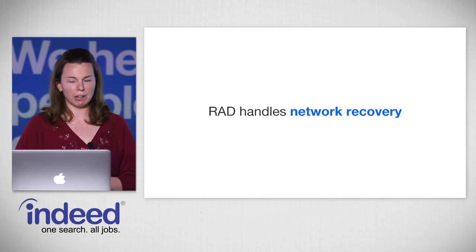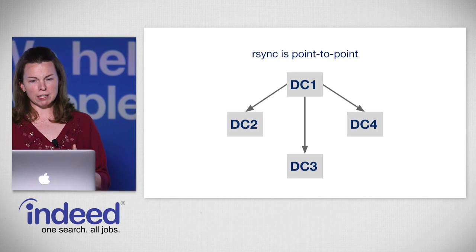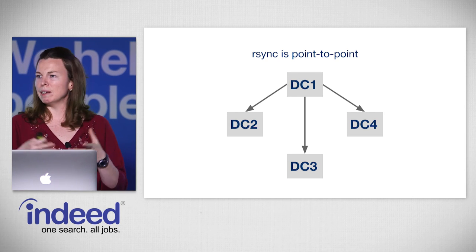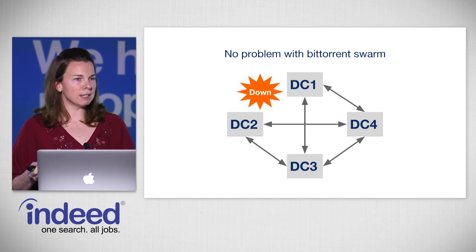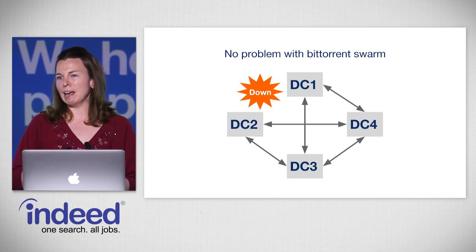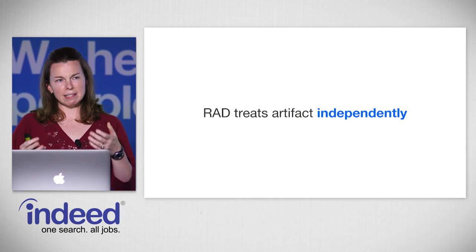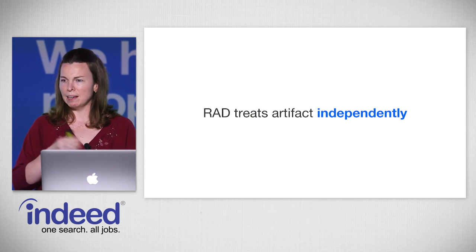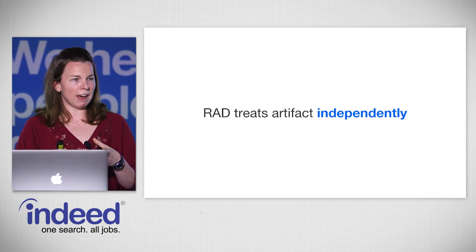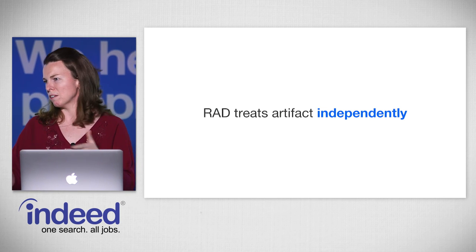We also wanted RAD to handle network recovery. With rsync, each data center had one primary data center serving its data. However, in BitTorrent, every data center is already talking to every other data center, so if a single link goes down, that's simply not a problem — the data center already has data provided from multiple other sources. We also built into RAD that each artifact is treated independently, so the delta downloads all subscribed artifacts in parallel, meaning a single large artifact won't choke up the other smaller artifacts needed on that machine.